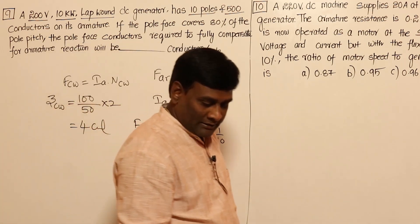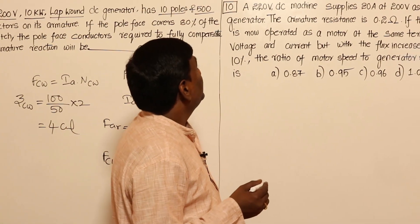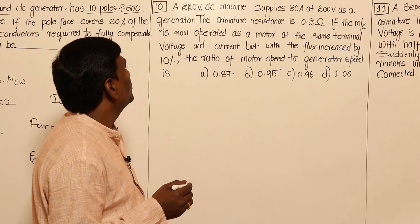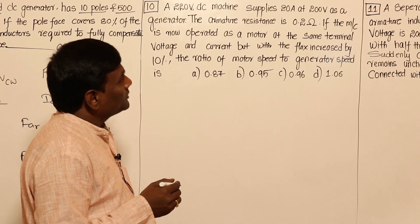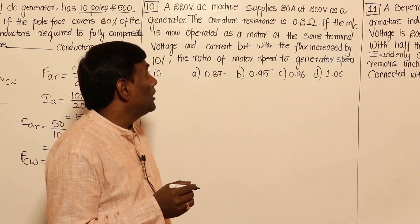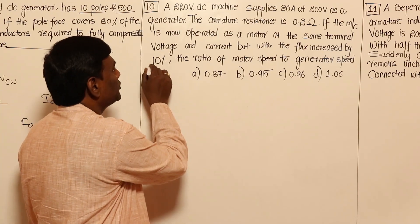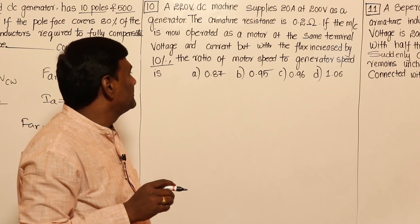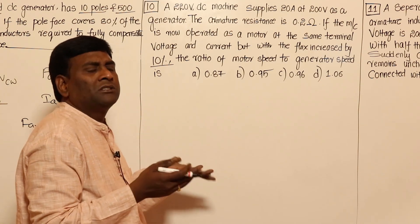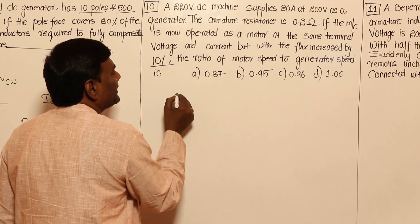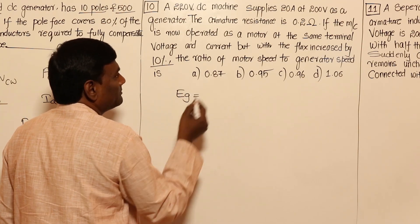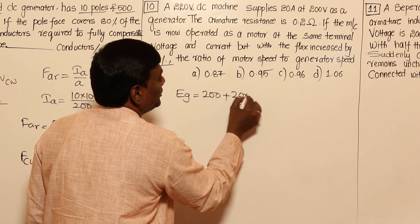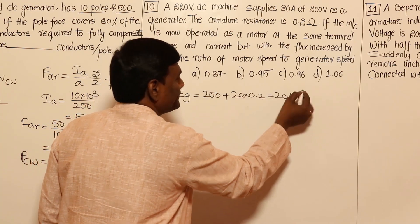Next question (OG/PYQ): A 220 volts DC machine supplies 20 amperes at 200 volts as a generator. The armature resistance is 0.2 ohm. If the machine is now operated as a motor at the same terminal voltage and current but with flux increased by 10%, find the ratio of motor speed to generator speed. For the generator: E_g = V_t + I_A × R_A = 200 + 20 × 0.2 = 204 volts.